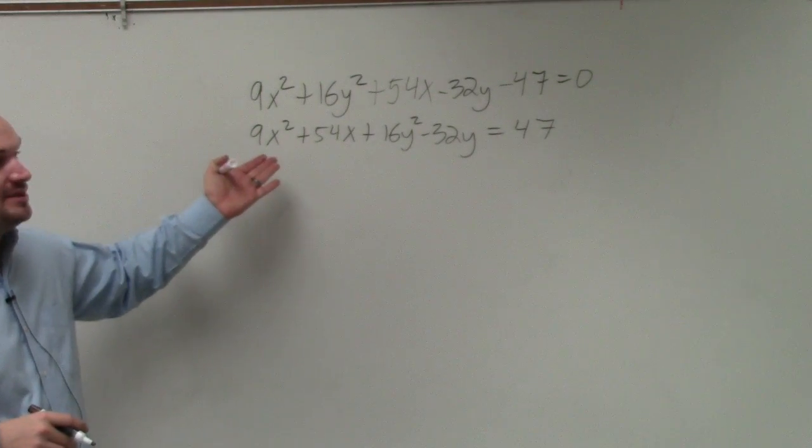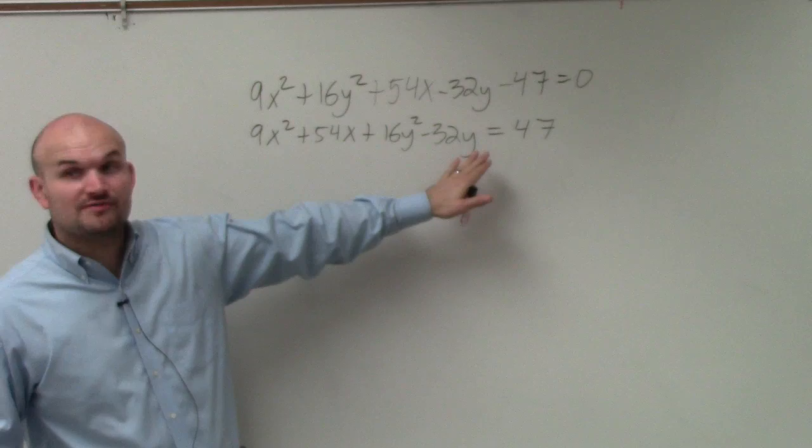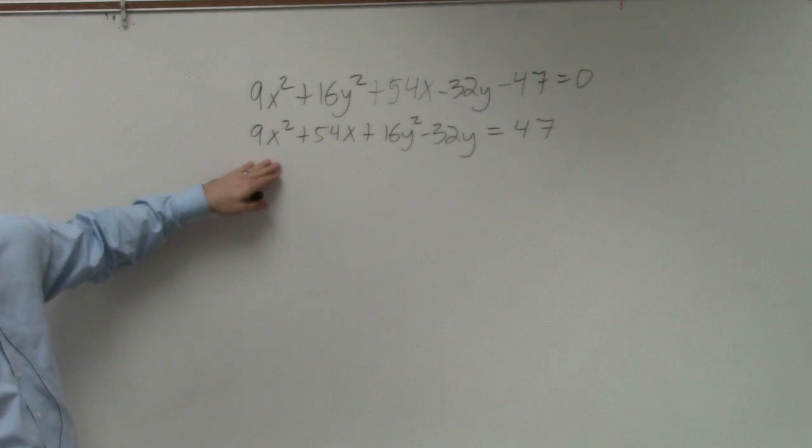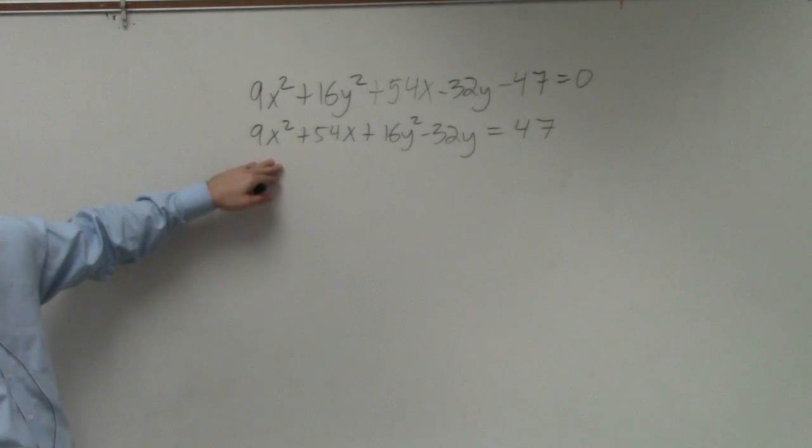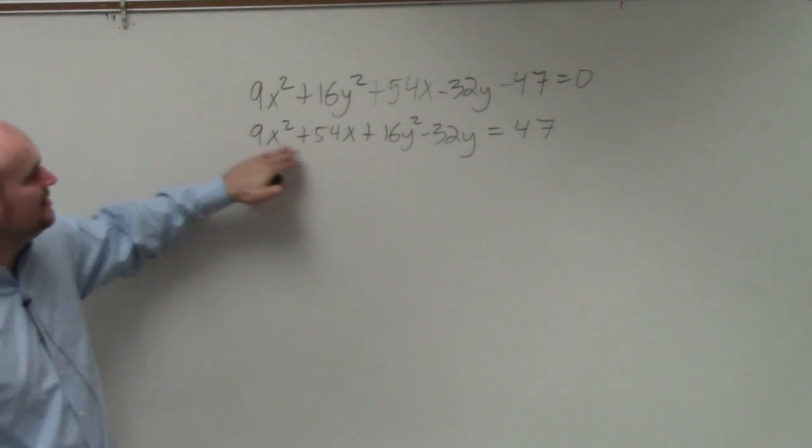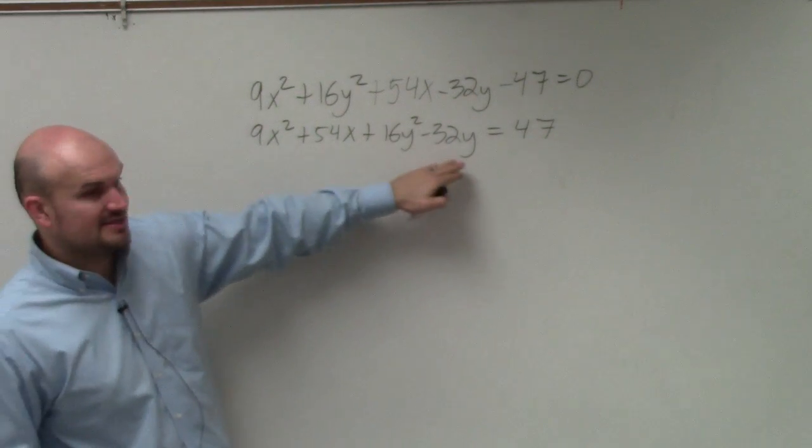Now, remember, we cannot complete the square. We need to complete the square twice for the x variable and the y variable. We can't complete the square, though, when there's a number in front. I don't know how many times I need to say this. So please remember, you've got to factor out the 9 between the x's and the 16 between the y's.